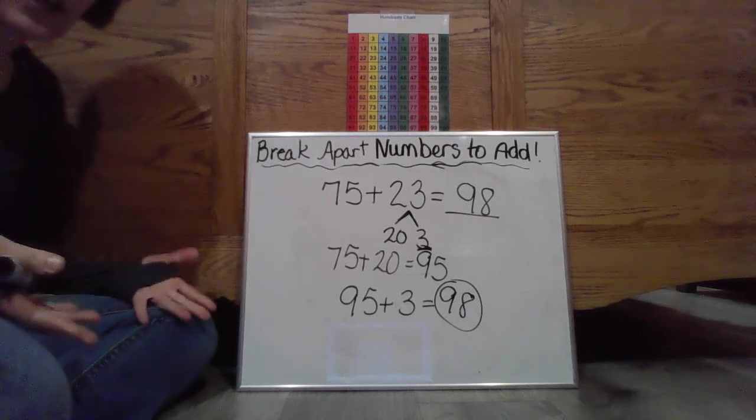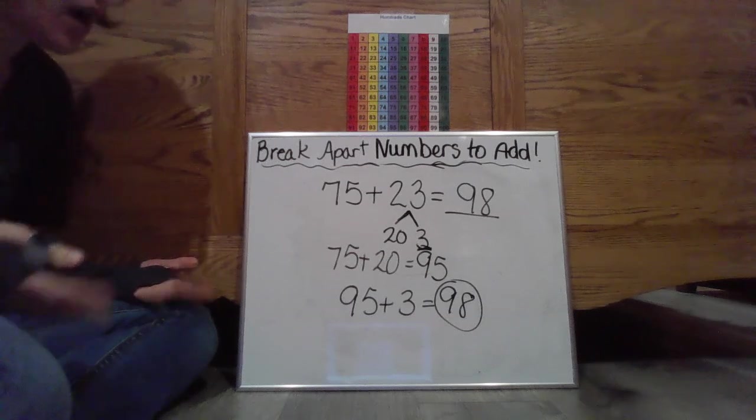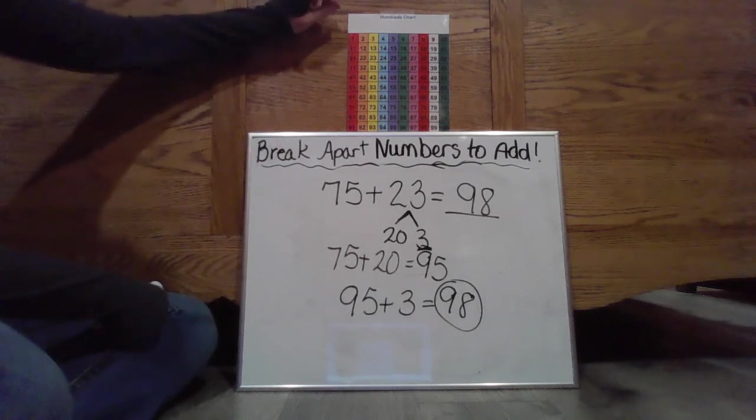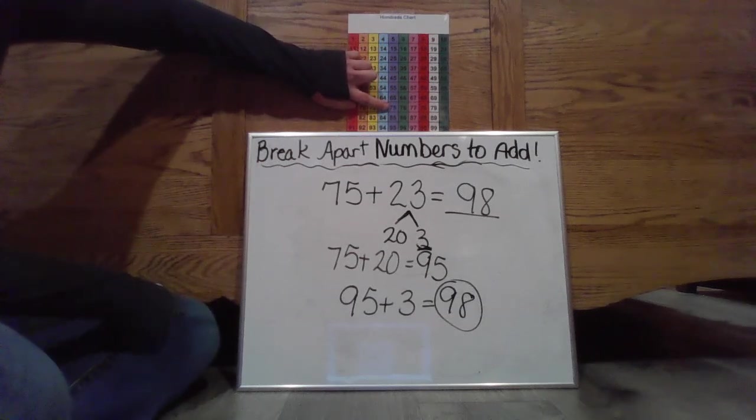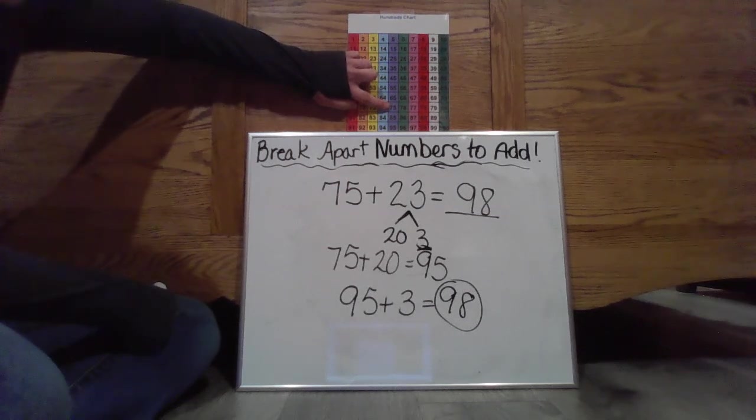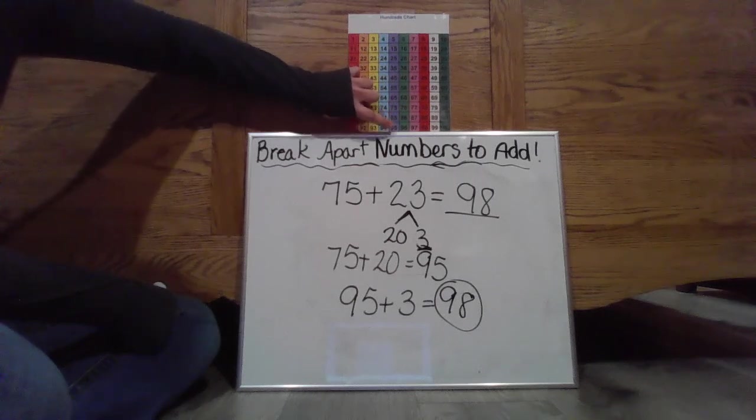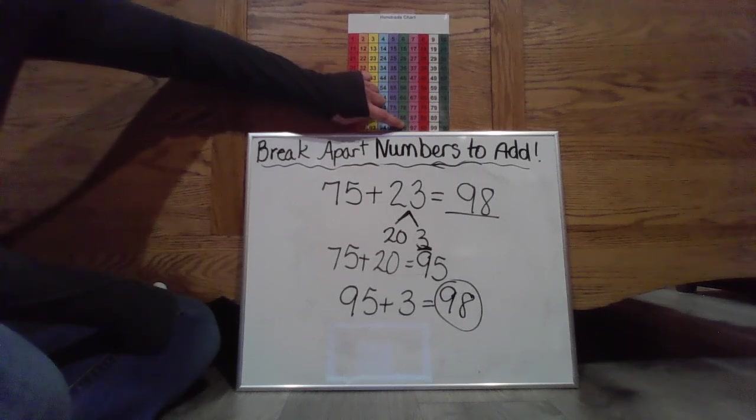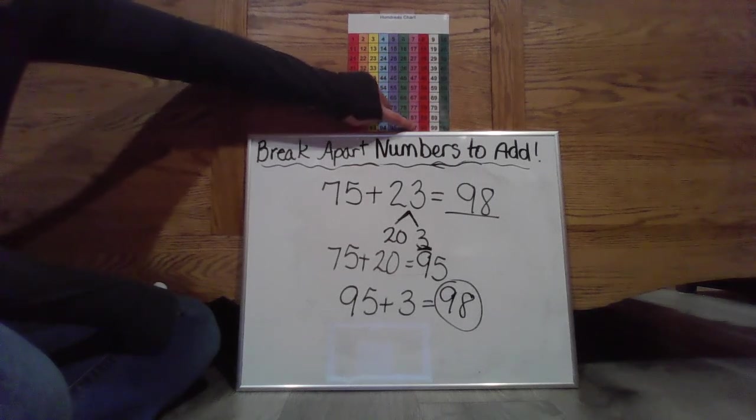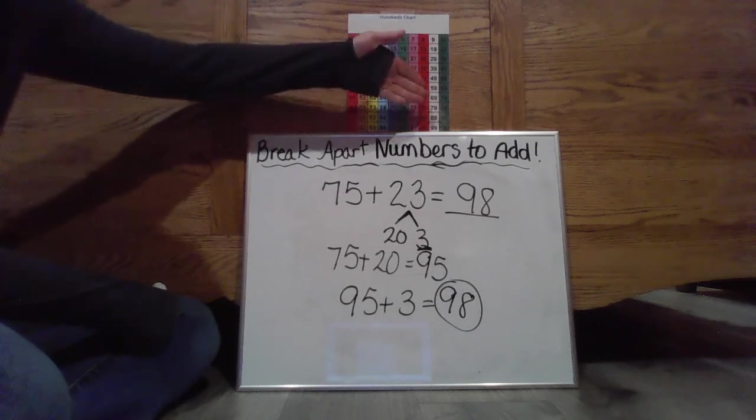So let's go ahead and let's do our other strategy strictly using the hundreds chart. So I'm at 75. I want to go two tens, three ones. 10, 20, or one, two. Then over three ones, one, two, three. There it is back at 98.